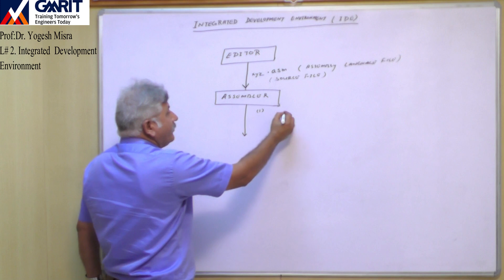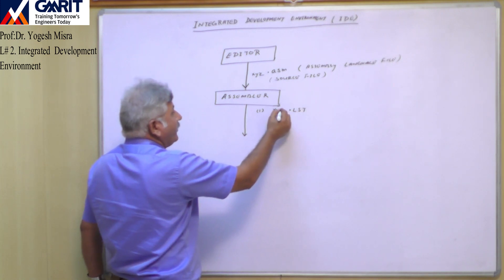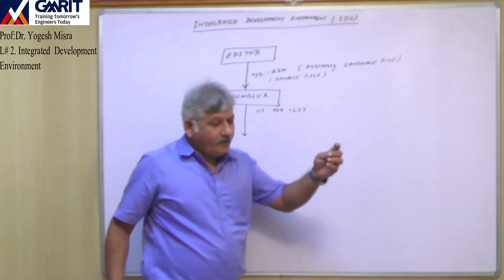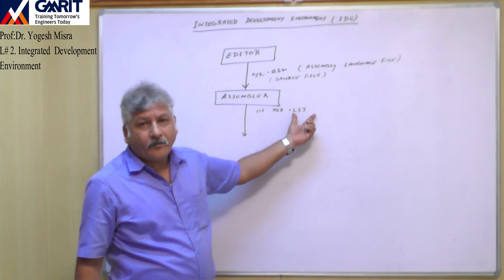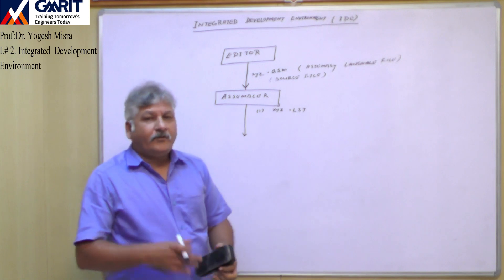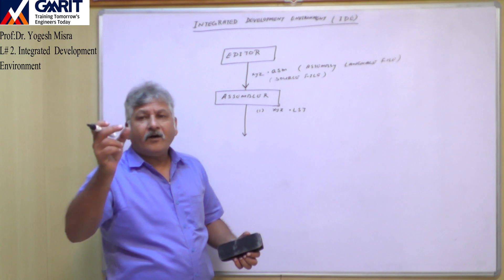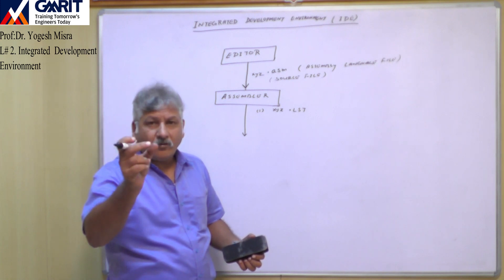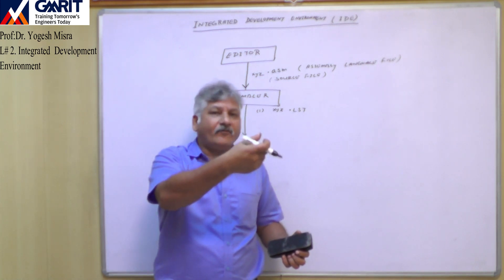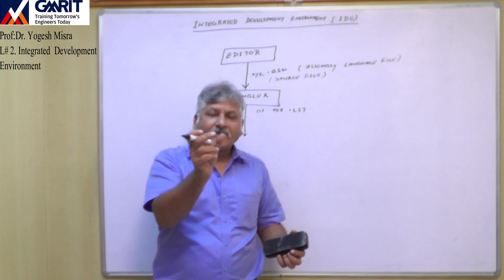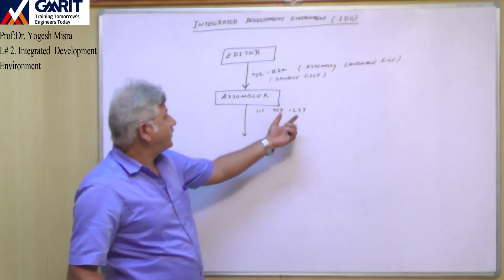The first file generated is a list file with the extension .list. In the list file you will find the mnemonics of your program, the op code or hex code of those mnemonics, as well as the memory addresses at which these hex codes have to be loaded. All this information will be present in the list file.